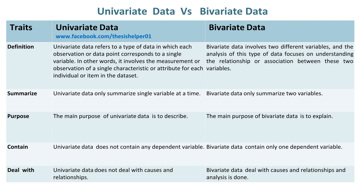Univariate Data only summarizes a single variable at a time. Whereas, Bivariate Data summarizes two variables. The main purpose of Univariate Data is to describe, whereas the main purpose of Bivariate Data is to explain.